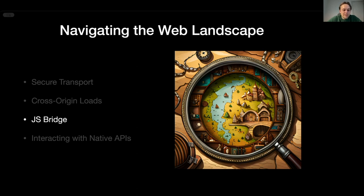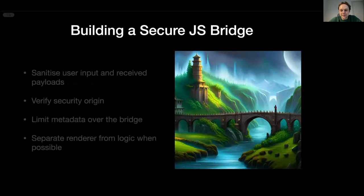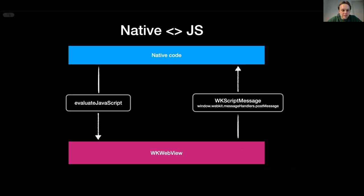Let's move to the third part: the JavaScript bridge. Apple provides a robust API for interacting with web content using JavaScript. From a high-level perspective, you can think about it as duplex communication where you can send data or inject JavaScript code using the evaluateJavaScript method, and also receive callbacks from WKWebView and handle them in native code through the WKScriptMessageHandler.